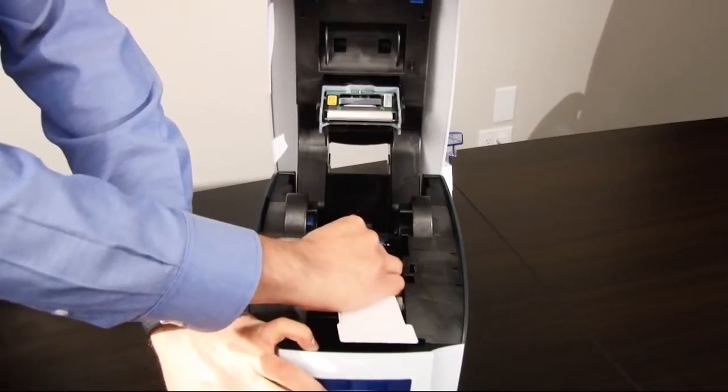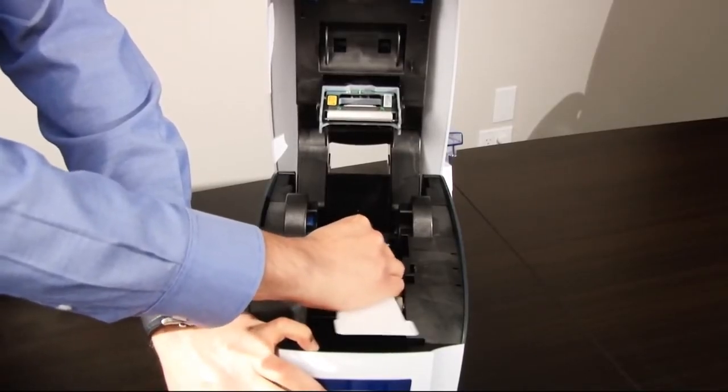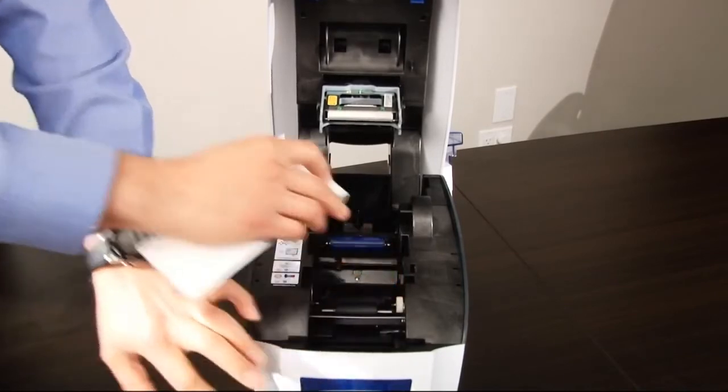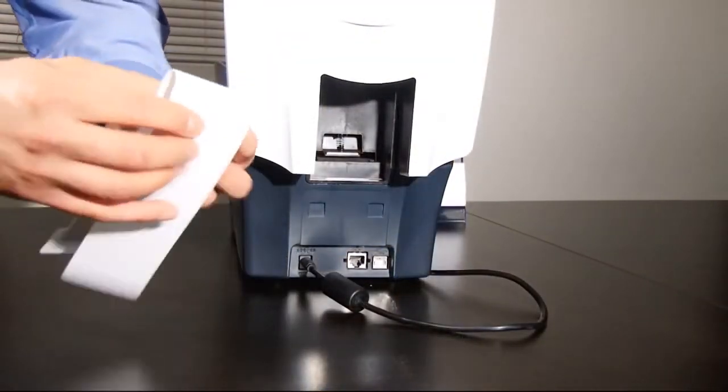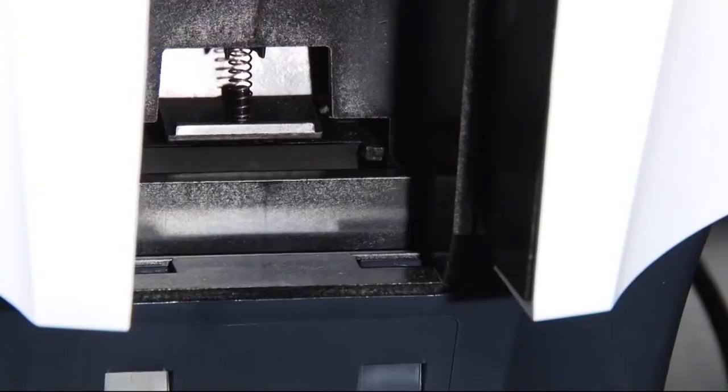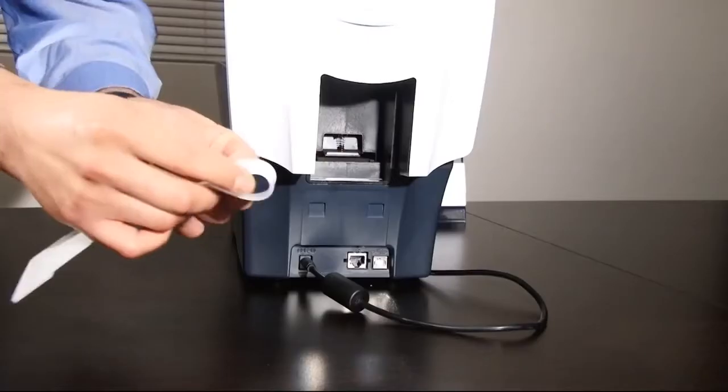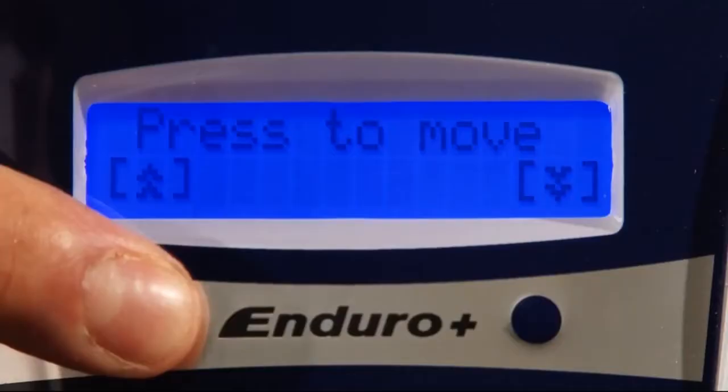Move the cleaning card back and forth on the roller for around 15 to 20 seconds while holding down either button. You may also wish to clean the rear intake roller. Hold the up move card button while pressing the cleaning card onto the rear roller for 15 to 20 seconds.